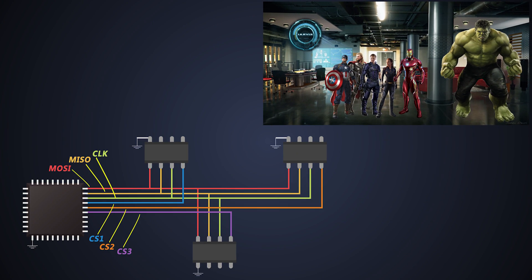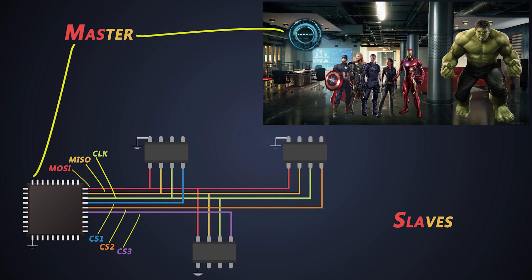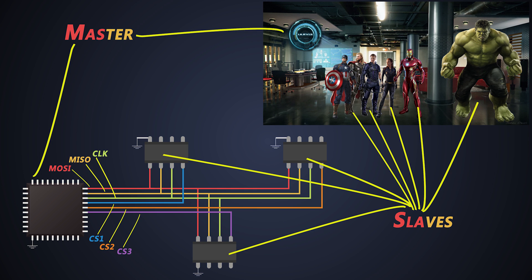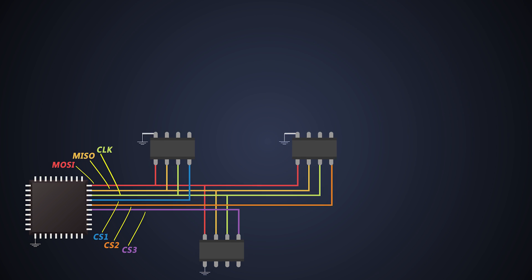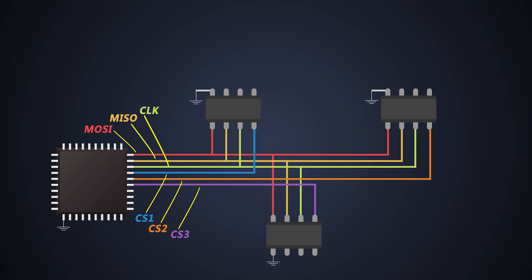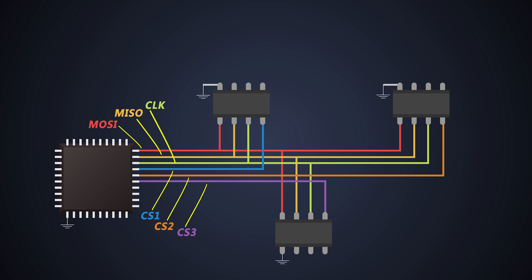Now, let's consider Jarvis as the master and the Avengers as slaves. The action of calling Iron Man is analogous to the chip select line used in SPI communication. So using SPI communication reduces power dissipation by remarkable numbers.